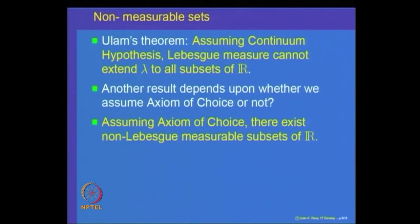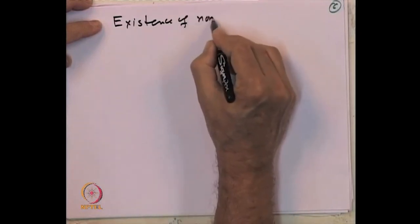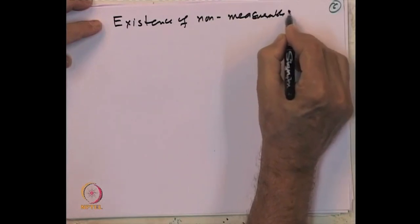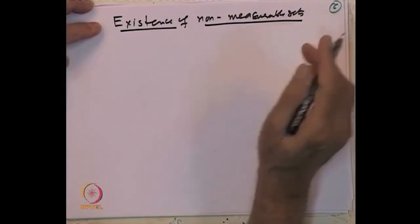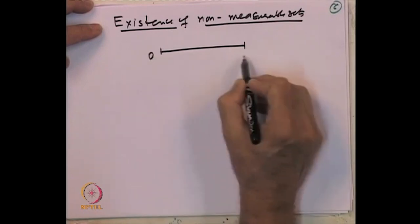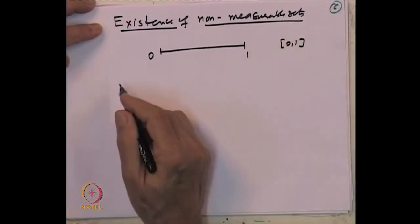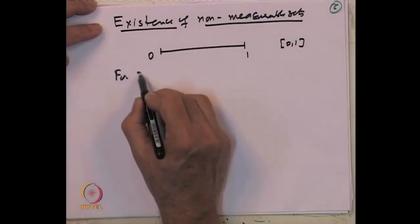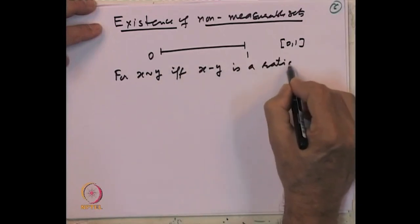Let us prove the existence of non-Lebesgue measurable sets. We want to construct a subset of the real line which is not Lebesgue measurable. Consider the interval [0, 1] and define a relation: x ~ y if x minus y is a rational number.